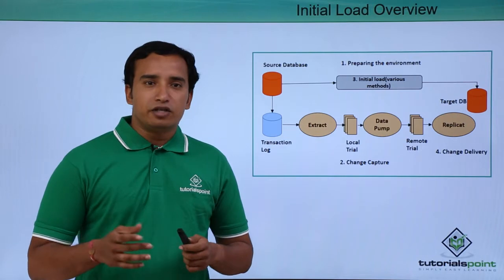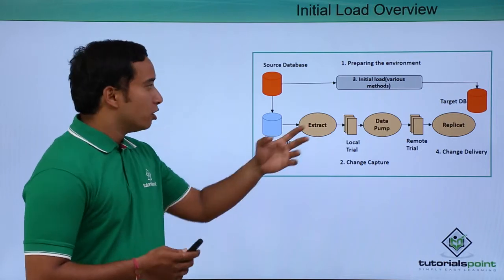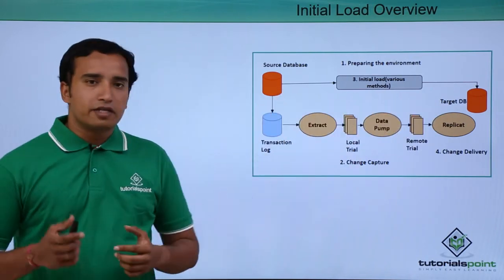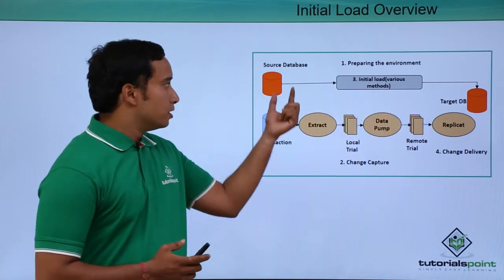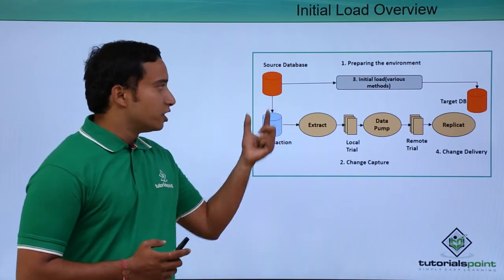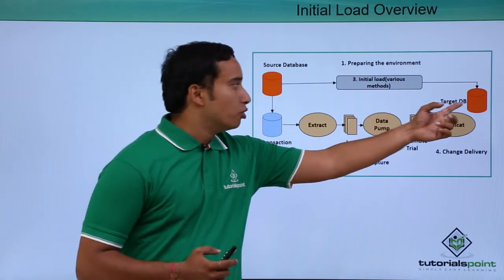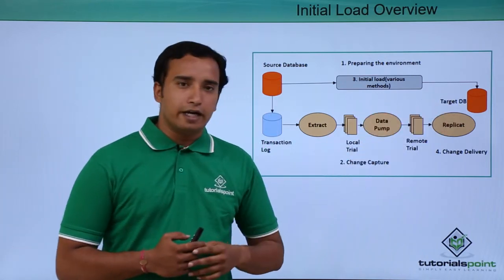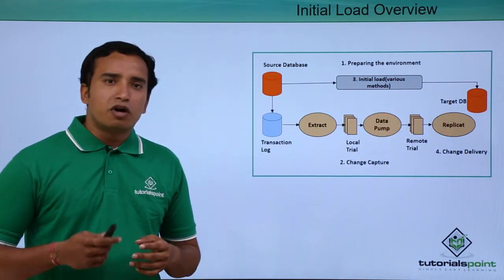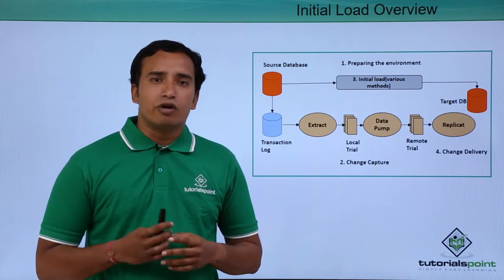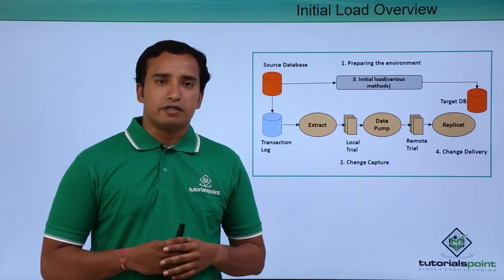But before we configure our normal GoldenGate process, we need to make sure that your target database and source databases are in sync. This could be your production database, and you are going to clone your target database. So what are the different ways in which we can clone our target database?